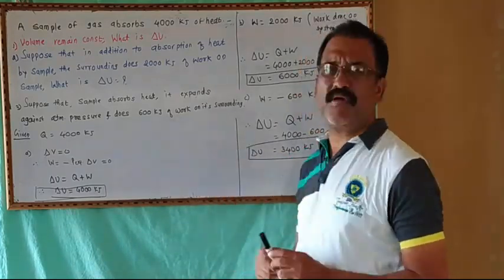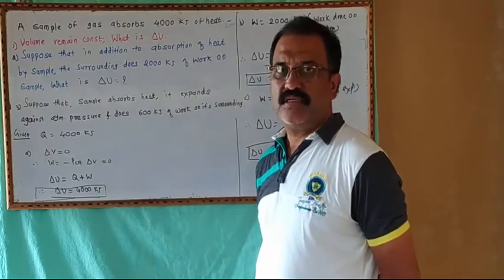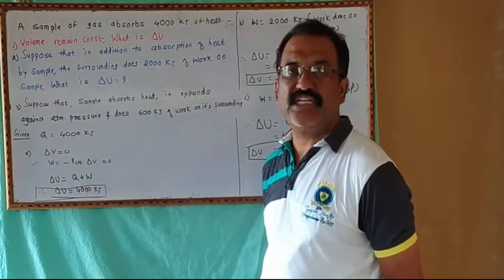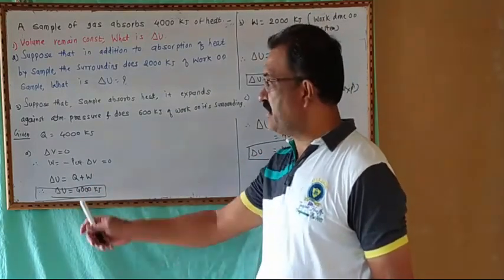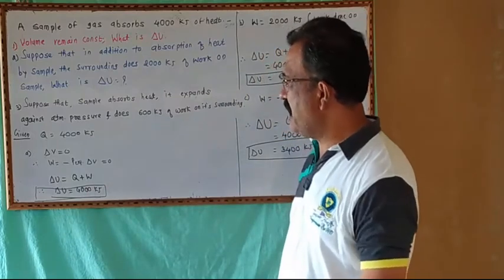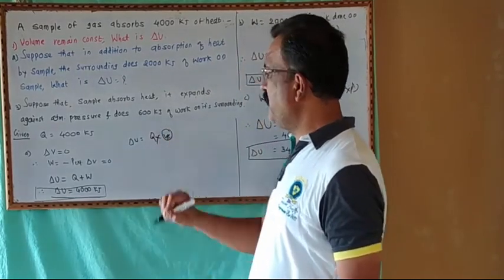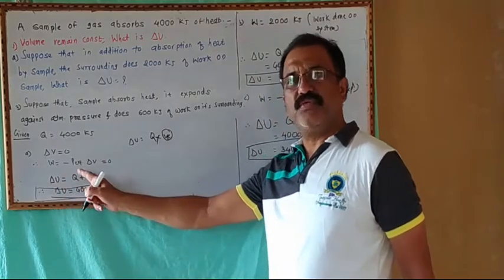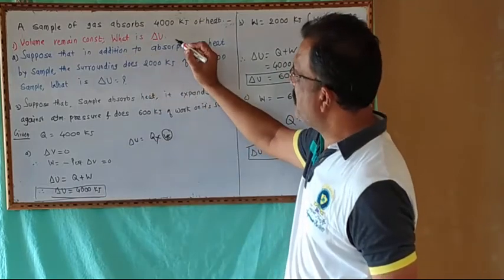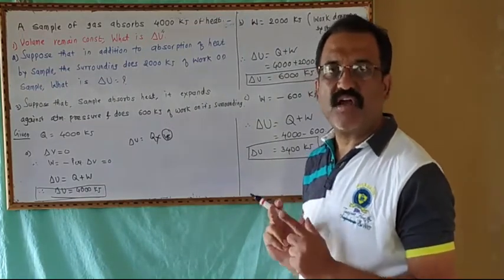For the first part: Q = 4000 kJ. When ΔV = 0, work W = −P_external × ΔV = −P_external × 0 = 0. Therefore, ΔU = Q + W, and since W = 0, ΔU = Q = 4000 kJ. This means that at constant volume, ΔU equals the amount of heat absorbed by the sample.